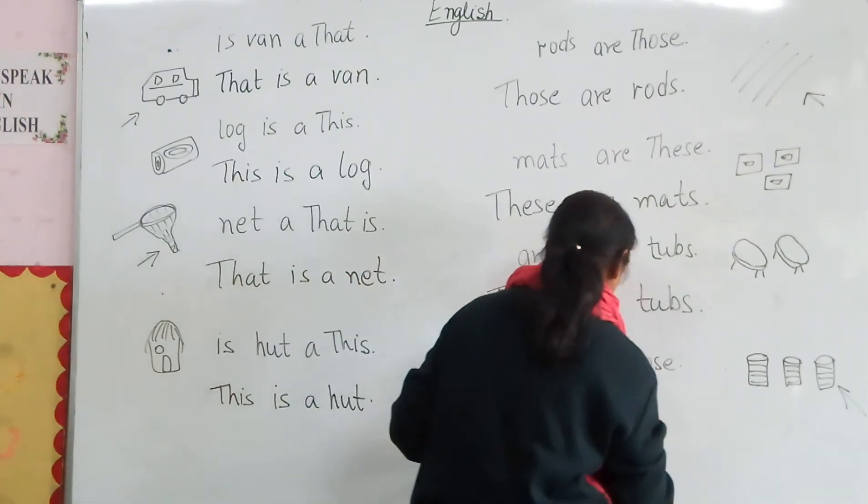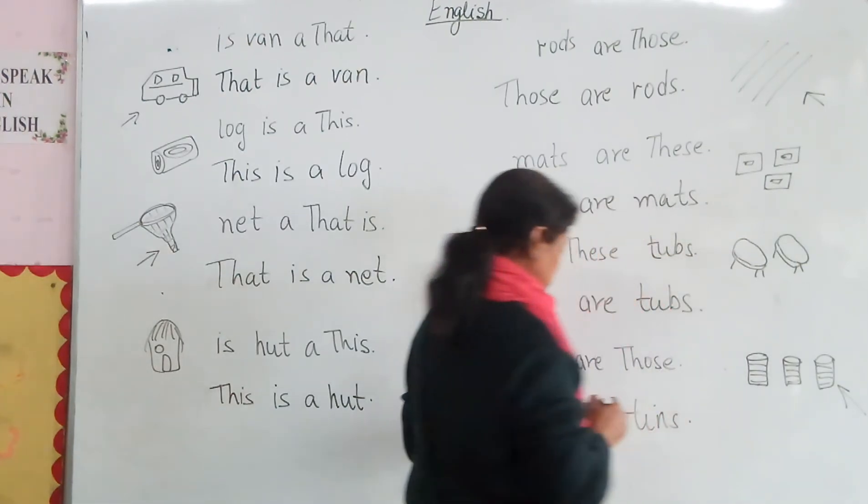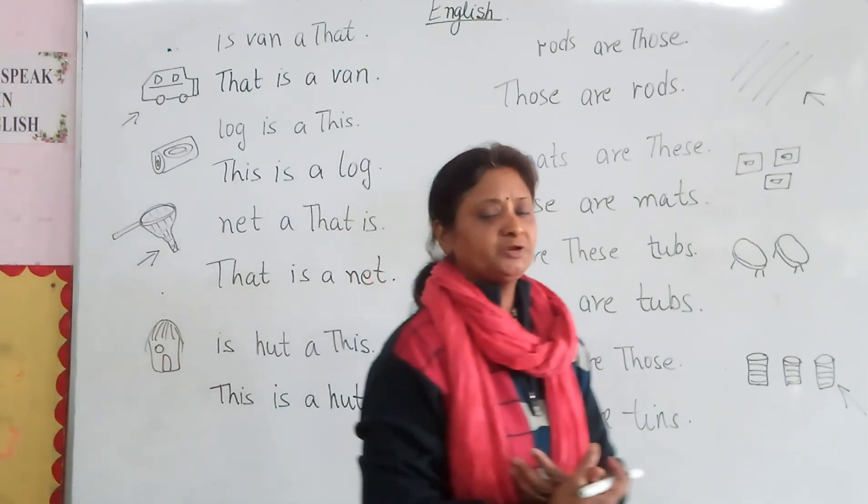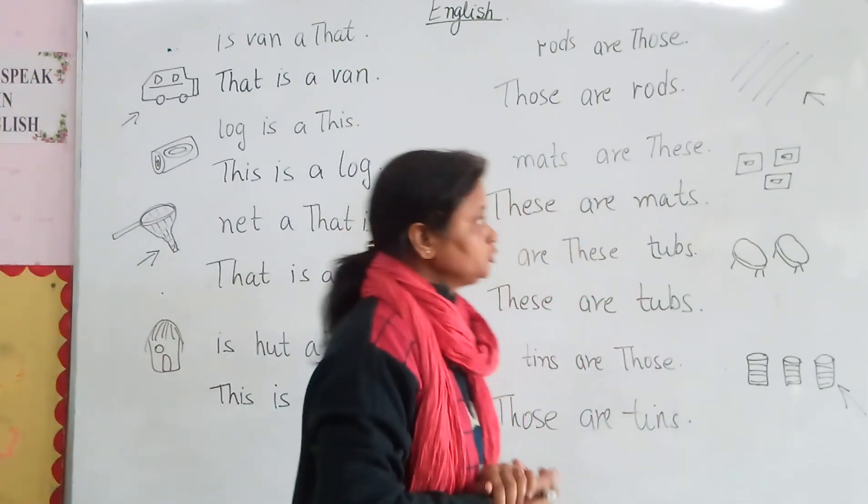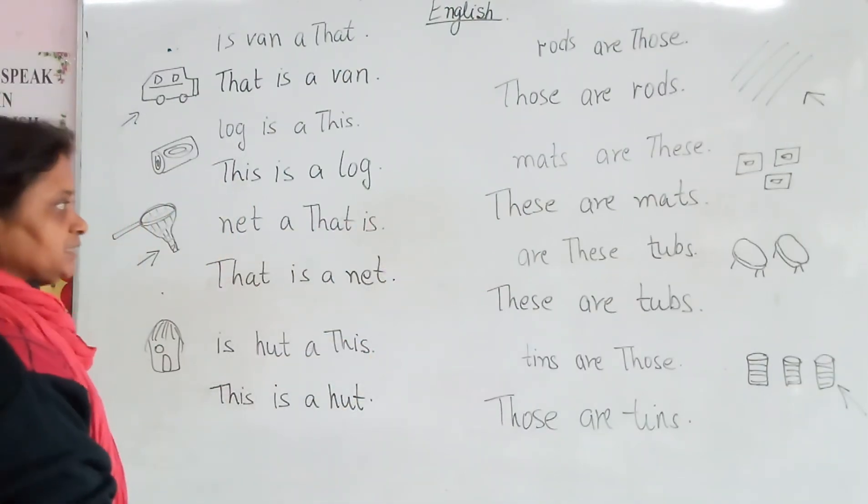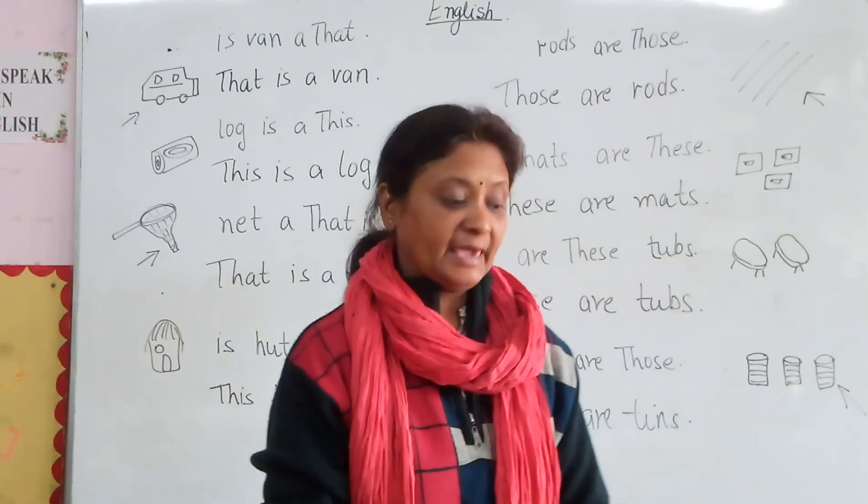So you will write here, those are rods. So in this way you have to do this exercise. You have to rearrange the words into proper meaningful sentences. Are you able to do this? Now, just complete your page number 2 and 3 from Book 8.